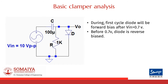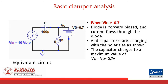In this circuit, during the first positive half cycle, the diode will become forward biased only after VIN is greater than 0.7 volts. Before VIN becomes greater than 0.7 volts, the diode will be reverse biased and the output will follow the input. This is the equivalent circuit when the diode is forward biased. Now current starts flowing through the diode and the capacitor starts charging.